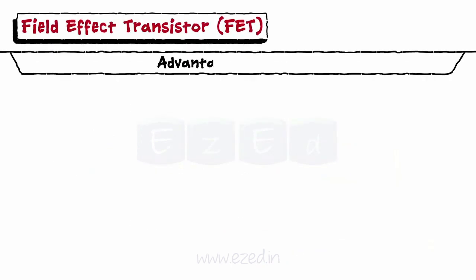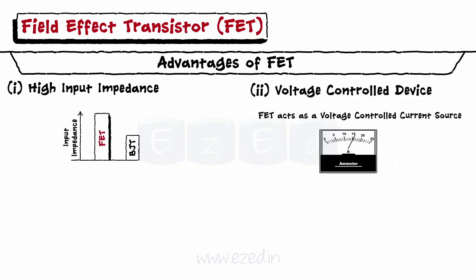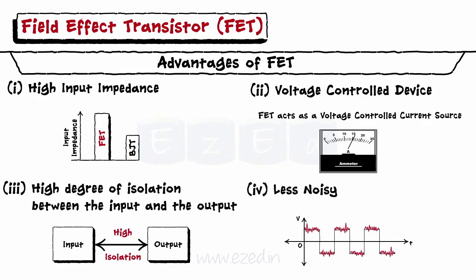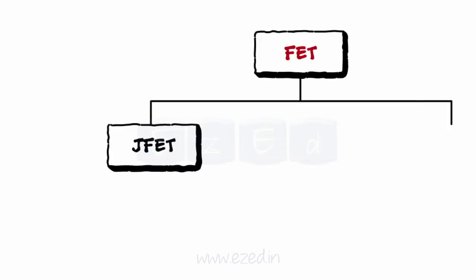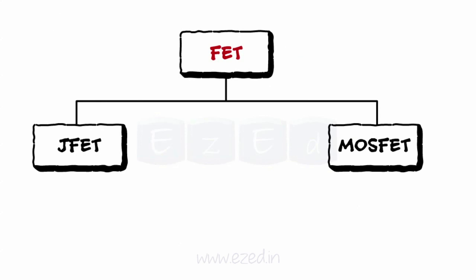The advantages of FET over BJT include high input impedance, as FET is a voltage control device. It provides a high degree of isolation between the input and the output, and it is less noisy. FETs are mainly of two types: Junction Field Effect Transistor, or JFET, and Metal Oxide Semiconductor Field Effect Transistor, or MOSFET.